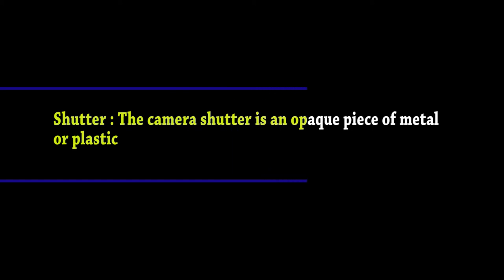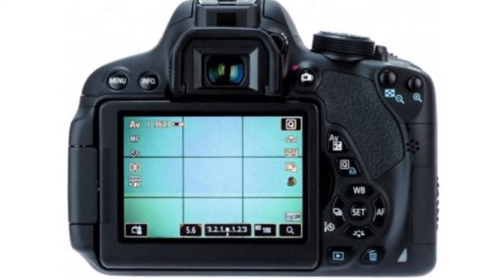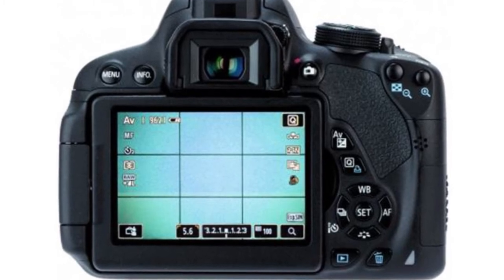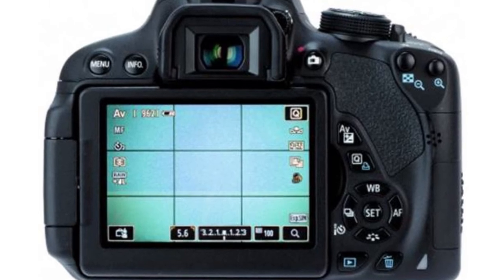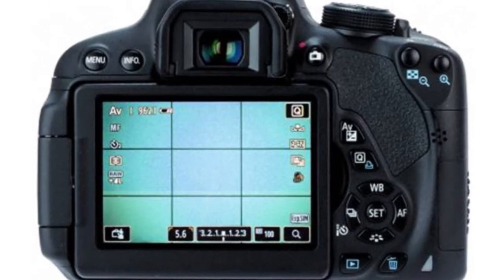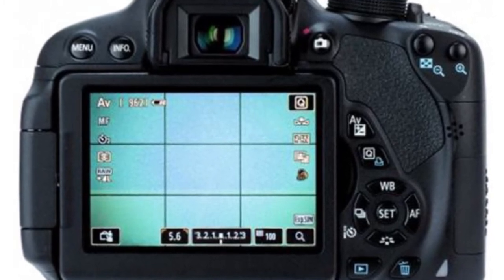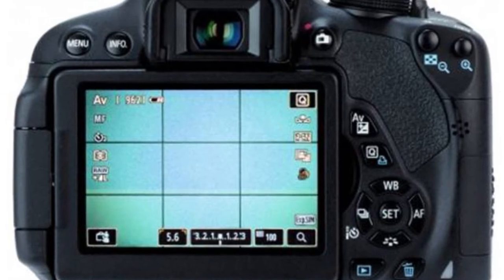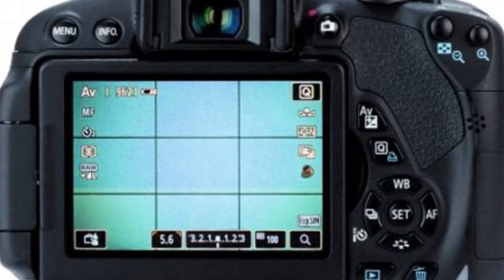The viewfinder is one of the most important parts of the camera. It is a rectangular shaped part at the back of your camera that lets you see and frame your subject. Some viewfinders are fully digital, showing you various details like your shutter speed, aperture, and ISO before you take the shot.